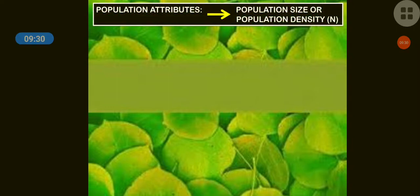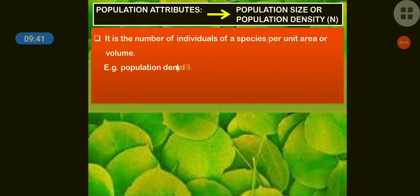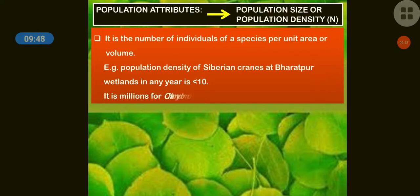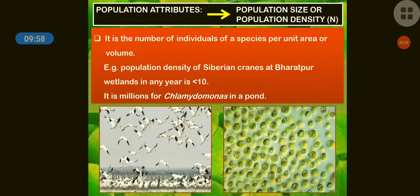The fifth and last population attribute is population size or population density. It is the number of individuals of a species per unit area or volume. For land, it is calculated area-wise, and for water, it is calculated volume-wise. For example, the population density of Siberian cranes at Bharatpur wetlands in any year is less than 10.